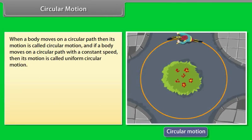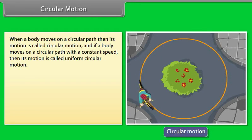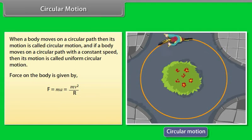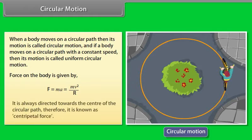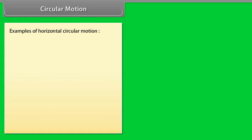Circular Motion: When a body moves on a circular path, its motion is called circular motion. If a body moves on a circular path with constant speed, its motion is called uniform circular motion. The force on the body is given by F = ma = mv²/R, always directed towards the centre of the circular path; therefore it is known as centripetal force.